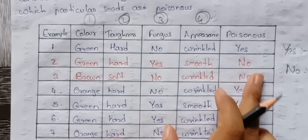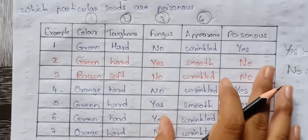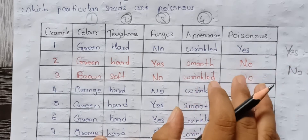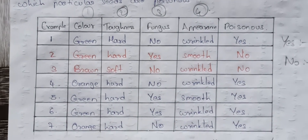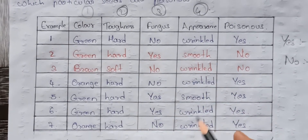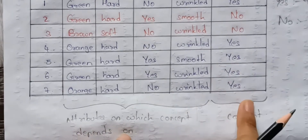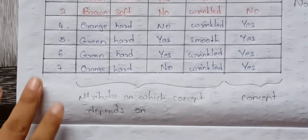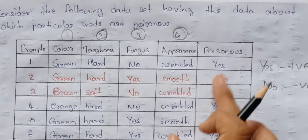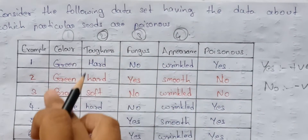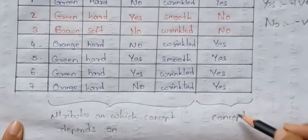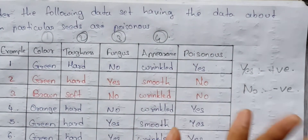So 'yes' means positive examples and 'no' means negative examples. If a seed is poisonous, those are the negative examples. The concept we are learning depends on these attributes — color, toughness, fungus, appearance — and the main concept is whether it is poisonous.